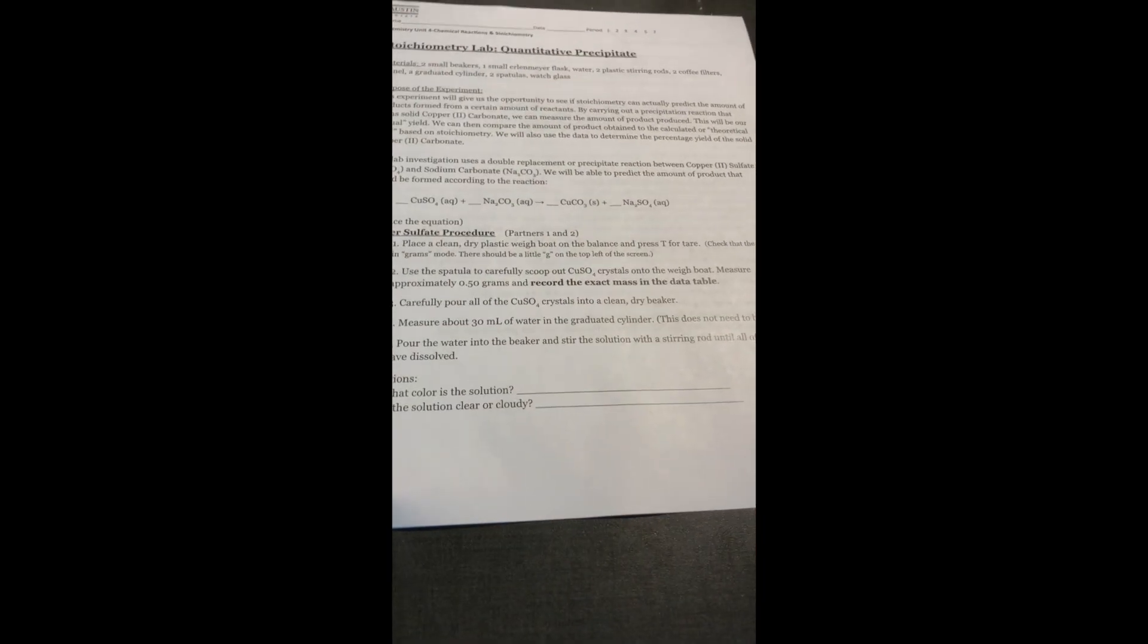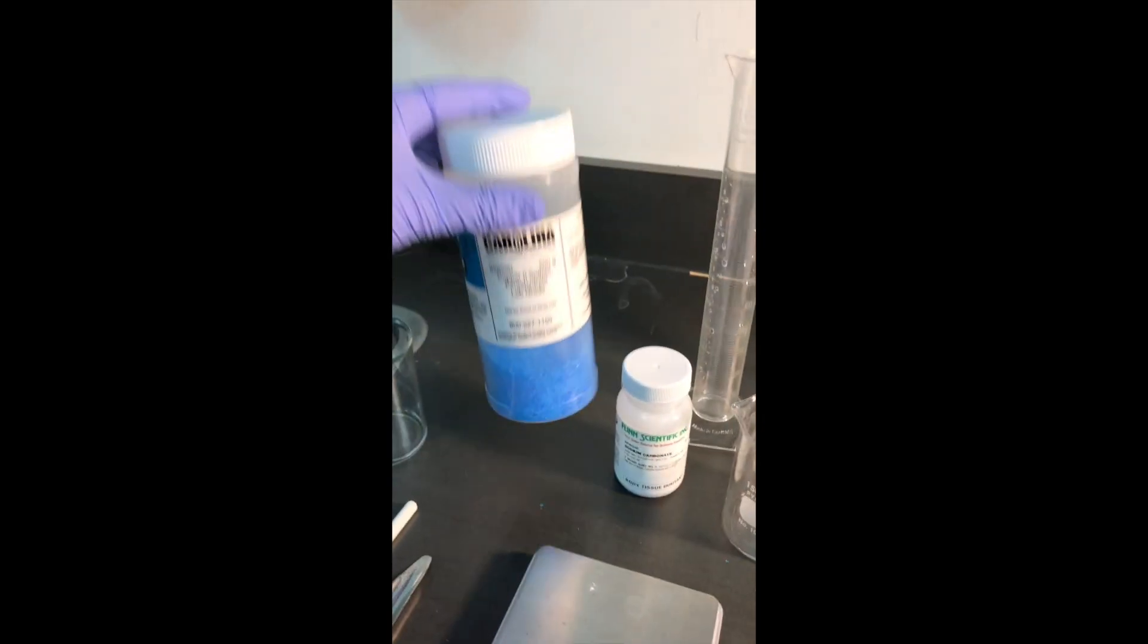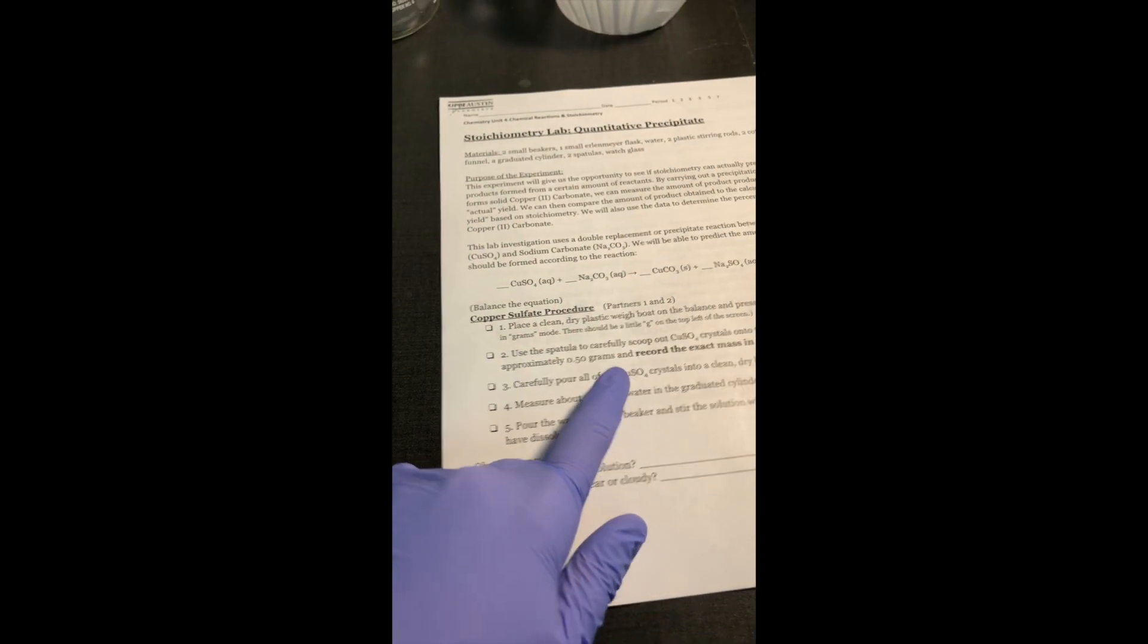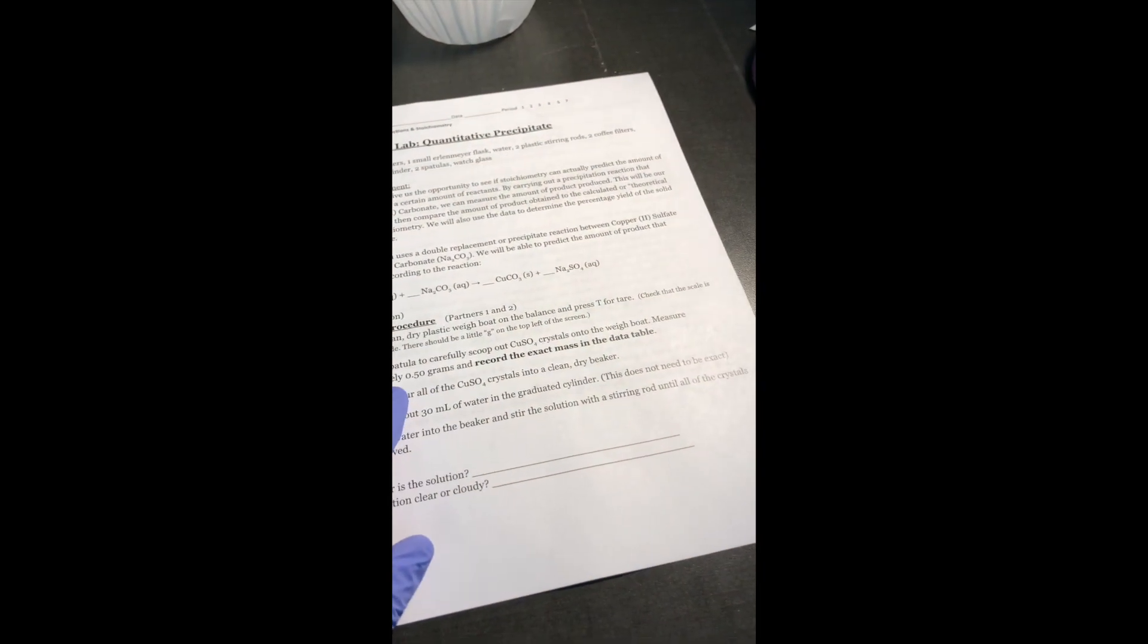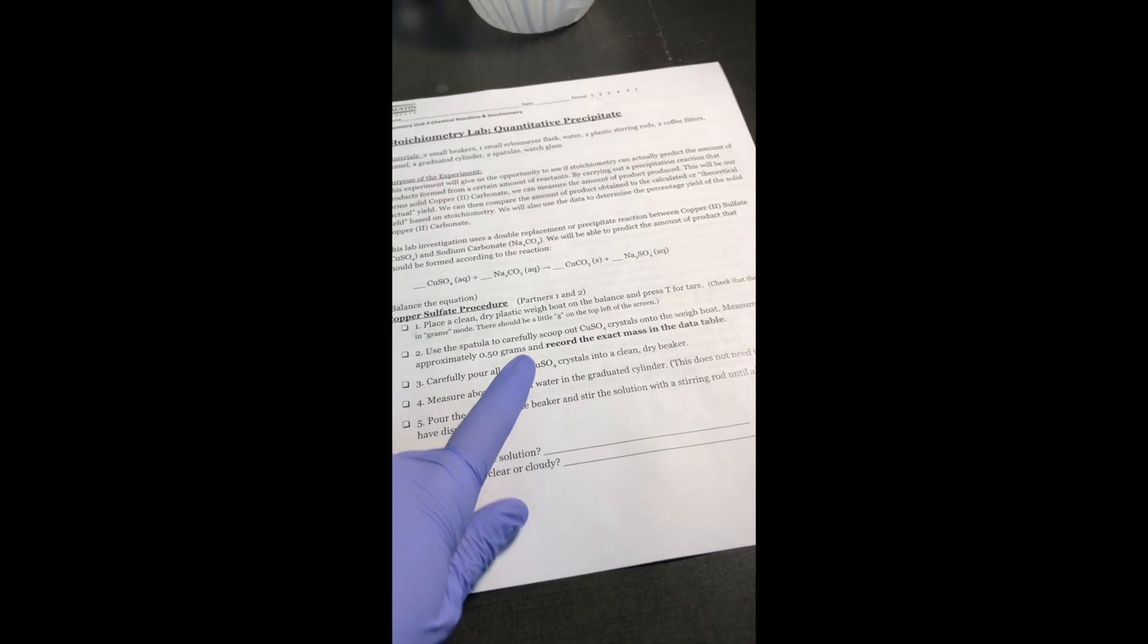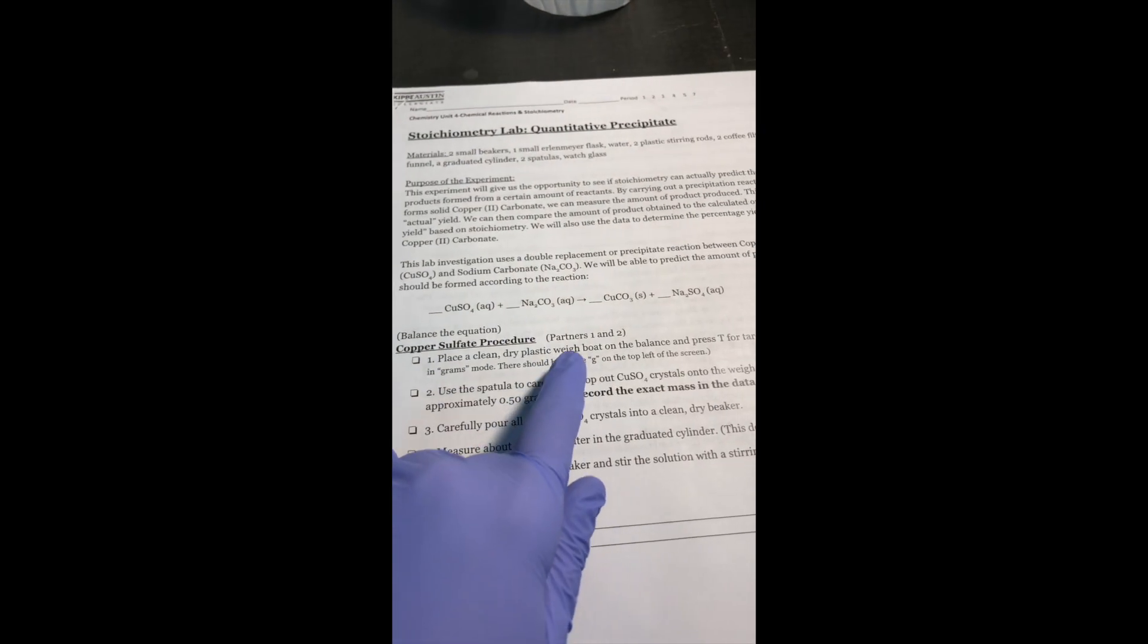The first part of the procedure is how to make the copper sulfate solution. So that is these lovely blue crystals. We're going to make a solution with about half a gram of copper sulfate. It says about or approximately, so we're going to get as close as we can to 0.5 grams and then we'll record the exact mass in the data table. First, we're going to place a clean, dry plastic weighboat on the balance and press T for tare.